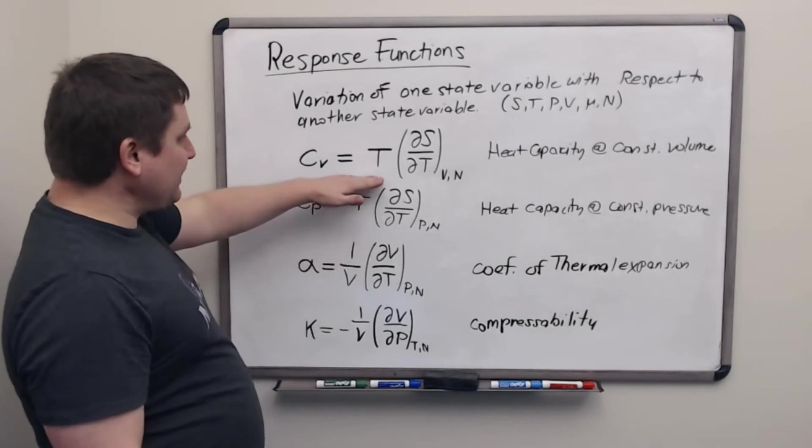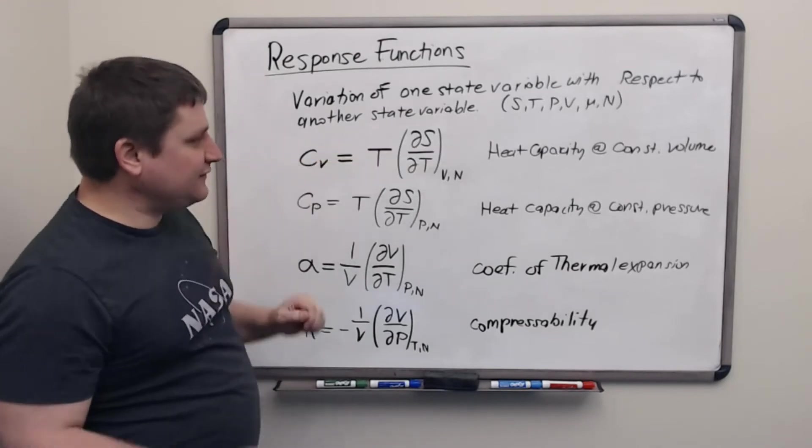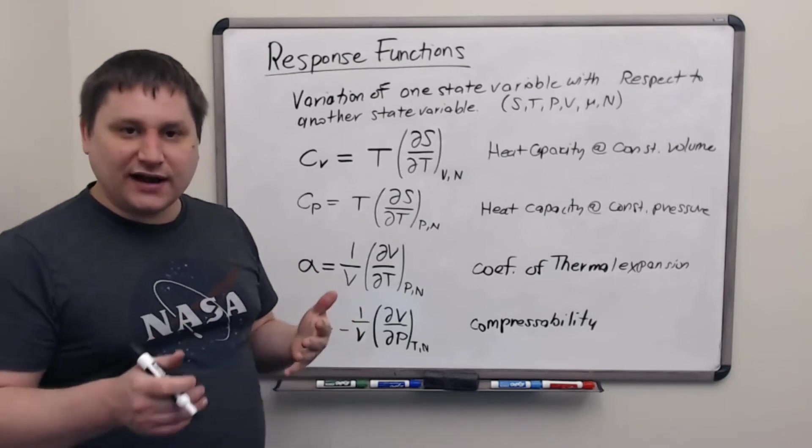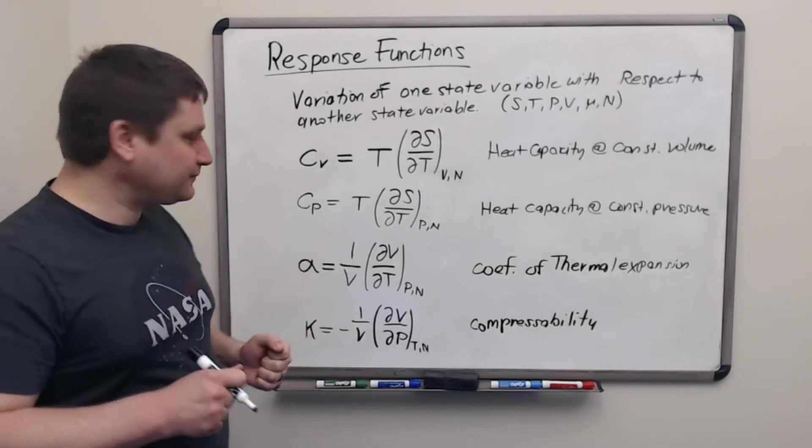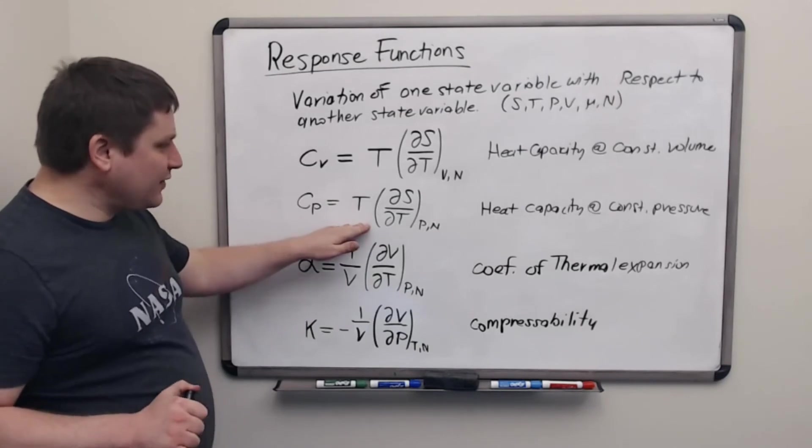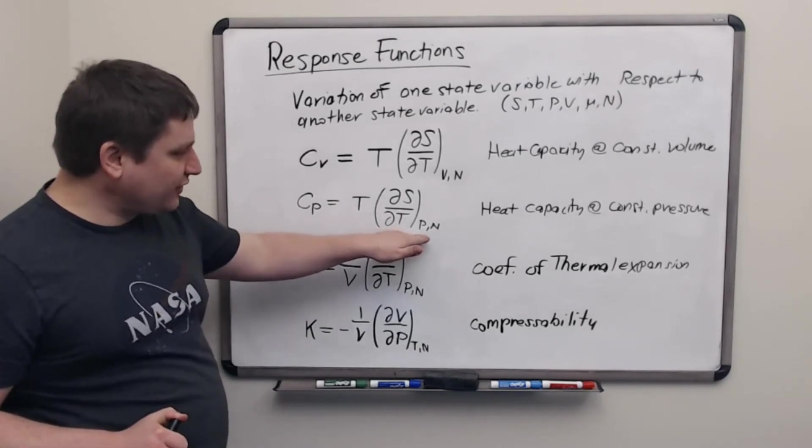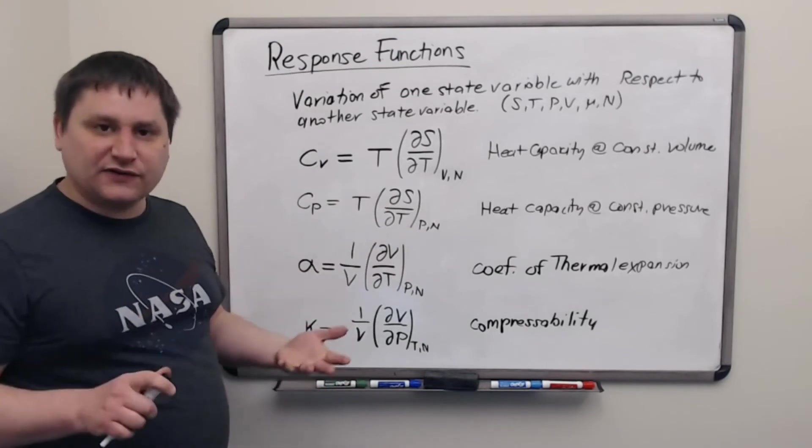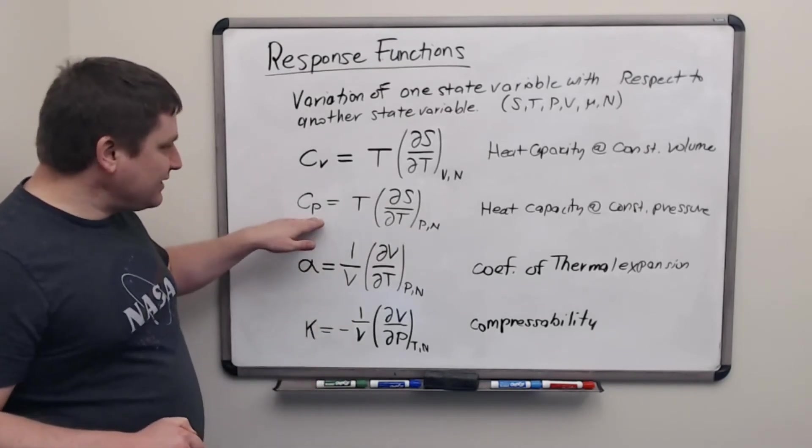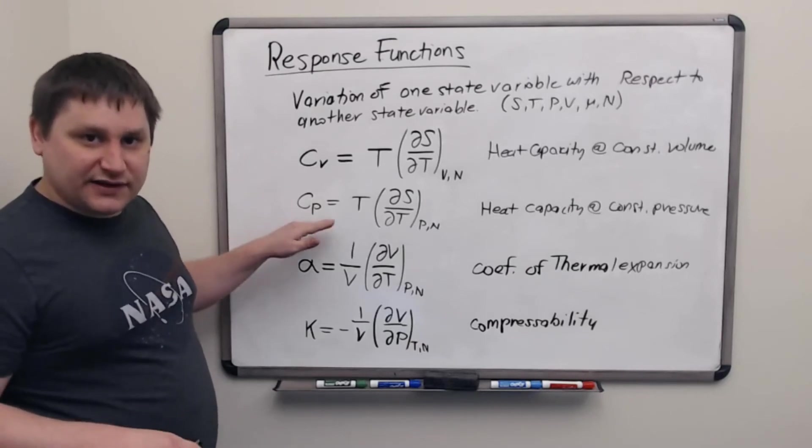So we'll find out in a bit that the heat capacity at constant volume is actually closely related to what the Helmholtz free energy function is doing. For the heat capacity at constant volume, we have temperature, pressure, and particle number. Those are the natural variables for the Gibbs free energy. So Cp is closely related to the Gibbs free energy.